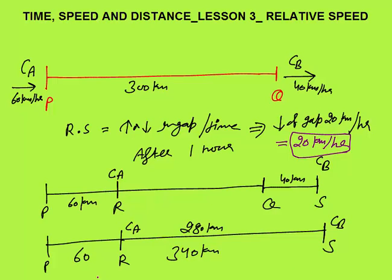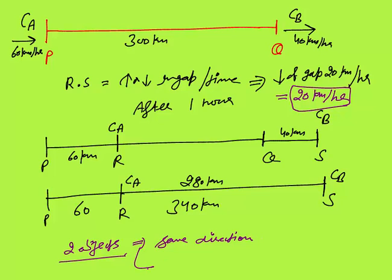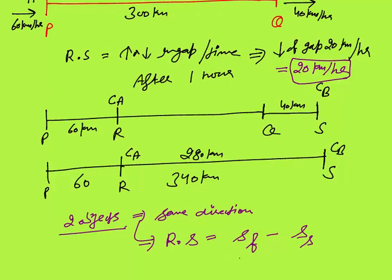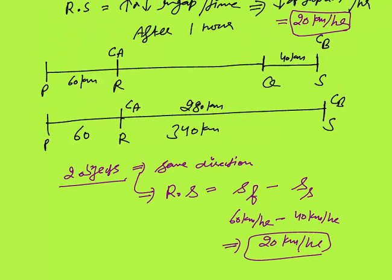Otherwise, you can simply learn that whenever two objects are moving in the same direction, as in this case, relative speed is the speed of the faster minus the speed of the slower. SF stands for speed of the faster car minus speed of the slower car. In this case, the speed of the faster car was 60 km per hour minus 40 km per hour — the difference is 20 km per hour. The same answer. Both methods you must know.